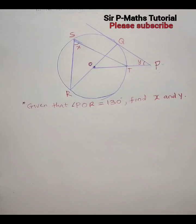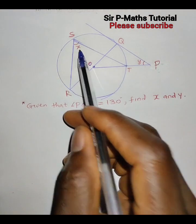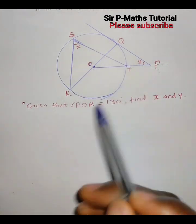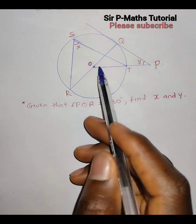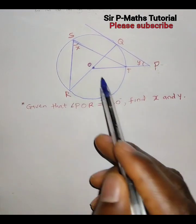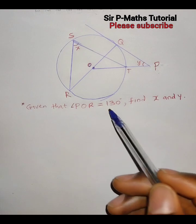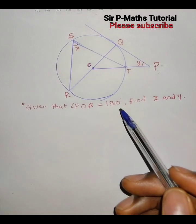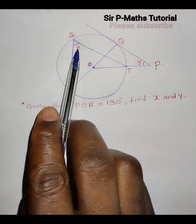Hello guys, welcome back to my YouTube channel and my Facebook page. We are asked to find the values of X and Y given the circle, where angle BOR is 130 degrees. So we'll consider the circle theorems that will help us get these angles.